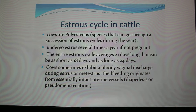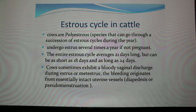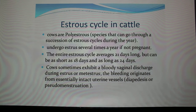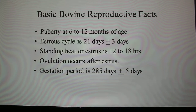The bloody discharge is called metestrus bleeding, and it has nothing to do with pregnancy or conception. Years ago people would AI dairy cattle and if they saw this metestrus bleeding two or three days after heat, after breeding, they'd think there was no conception. But the fertilized egg is still up in the oviduct, and the blood is coming from the uterus — it won't harm the egg because it's up in the oviduct. It's kind of a misnomer.